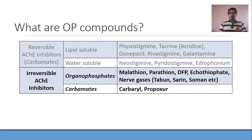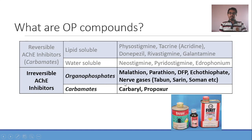What are OP compounds? OP compounds are cholinesterase inhibitors. Cholinesterase inhibitors actually belong to two major groups: reversible cholinesterase inhibitors and irreversible cholinesterase inhibitors. All the reversible cholinesterase inhibitors are used in the management of various conditions. But the irreversible cholinesterase inhibitors are lethal drugs — they are designed to kill. All irreversible cholinesterase inhibitors are insecticides and pesticides. There are two subtypes of irreversible cholinesterase inhibitors: organophosphates and carbamates.